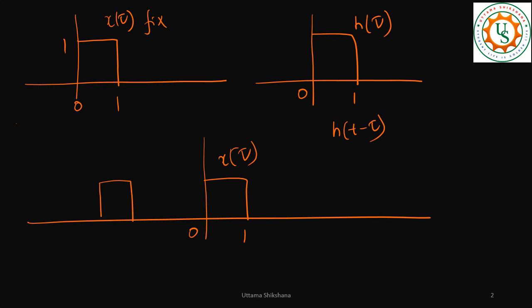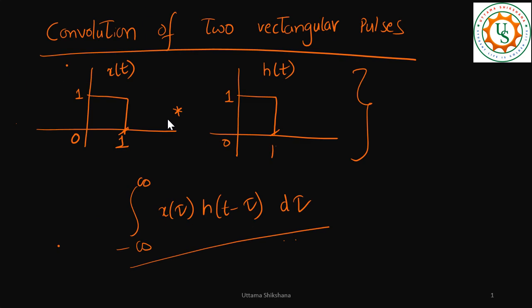To get h(t − τ), first we take h(−τ), which is the mirror image. So 0 comes here and 1 goes to the other side. Then we add t to get h(t − τ). Now this mirrored sequence needs to be dragged from minus infinity to infinity. Whenever there is an overlap between the two sequences, we integrate — essentially evaluating the area under the overlapped curve.